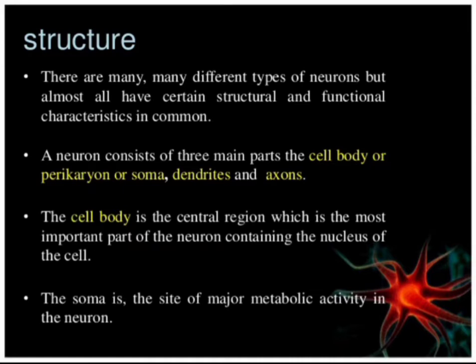The main parts of a neuron are: first, the cell body — also called pericaryon or soma — then the dendrites, and finally the axons. These are the three basic structural parts of a neuron.